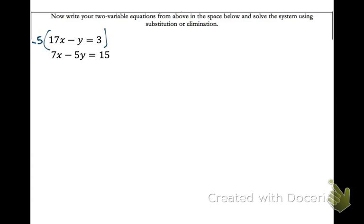Okay, go ahead and distribute the negative 5, pause your video, work that out, and rewrite both equations once your negative 5 has been distributed. Okay, now that I've got opposites, I'm going to go ahead and add down. My y's will cancel, and I'm going to solve all the way for x.